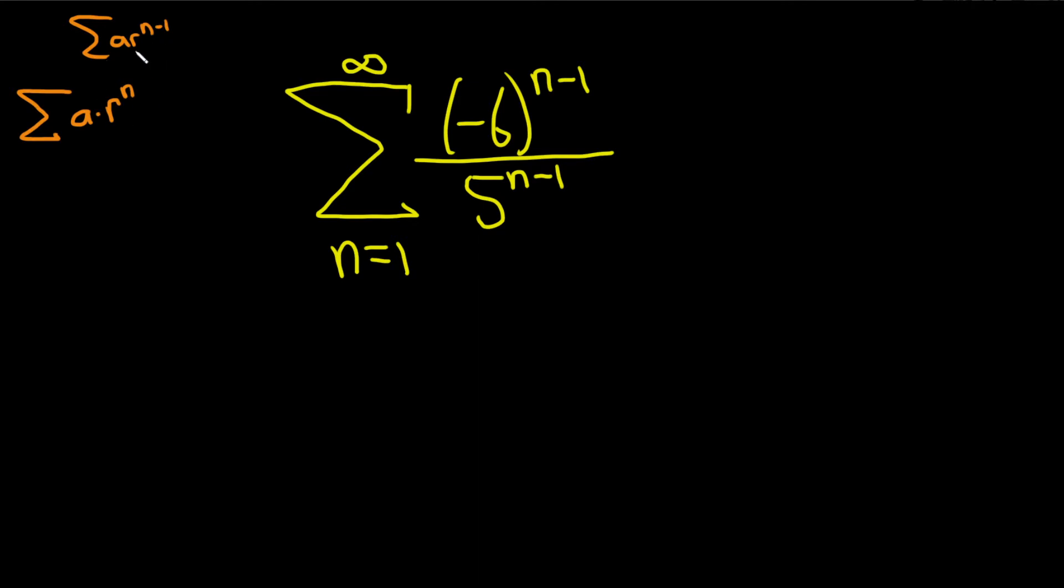So here we have an n minus 1 and an n minus 1. So we can use properties of exponents to write it as follows. This is the sum from 1 to infinity and we can write this as negative 6 fifths to the n minus 1, because they're both to the n minus 1 power so you can make that algebraic move and do that.